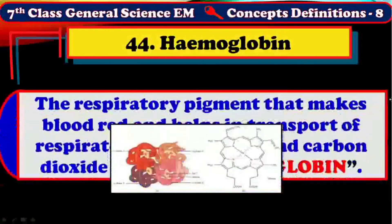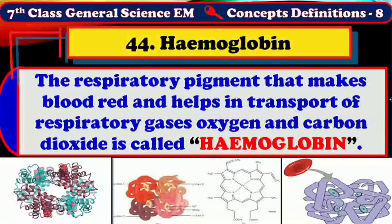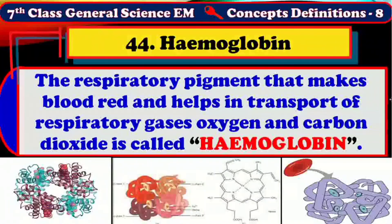The respiratory pigment that makes blood red and helps in the transport of respiratory gases such as oxygen and carbon dioxide is called hemoglobin, abbreviated as Hb or HGB. In a healthy human being, around 12 to 20 grams of Hb is required in every 100 ml of blood. For appropriate Hb levels, we should eat iron-containing foods, because iron is one of the important components of hemoglobin — such as dried fruits, minor cereals, liver, etc.